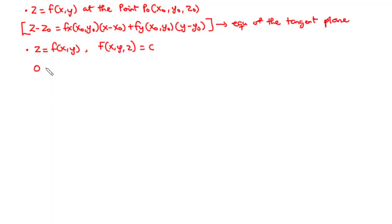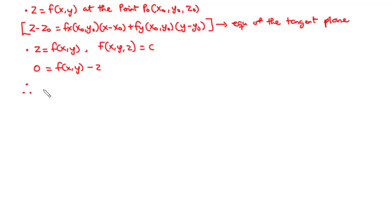So that we have 0 equals small f of xy minus z. In this case, we have c equal to 0, and then capital F of x, y, z equal to small f of xy minus z. Thus, we say that capital F of x, y, z is equal to small f of xy minus z, and that is equal to 0.